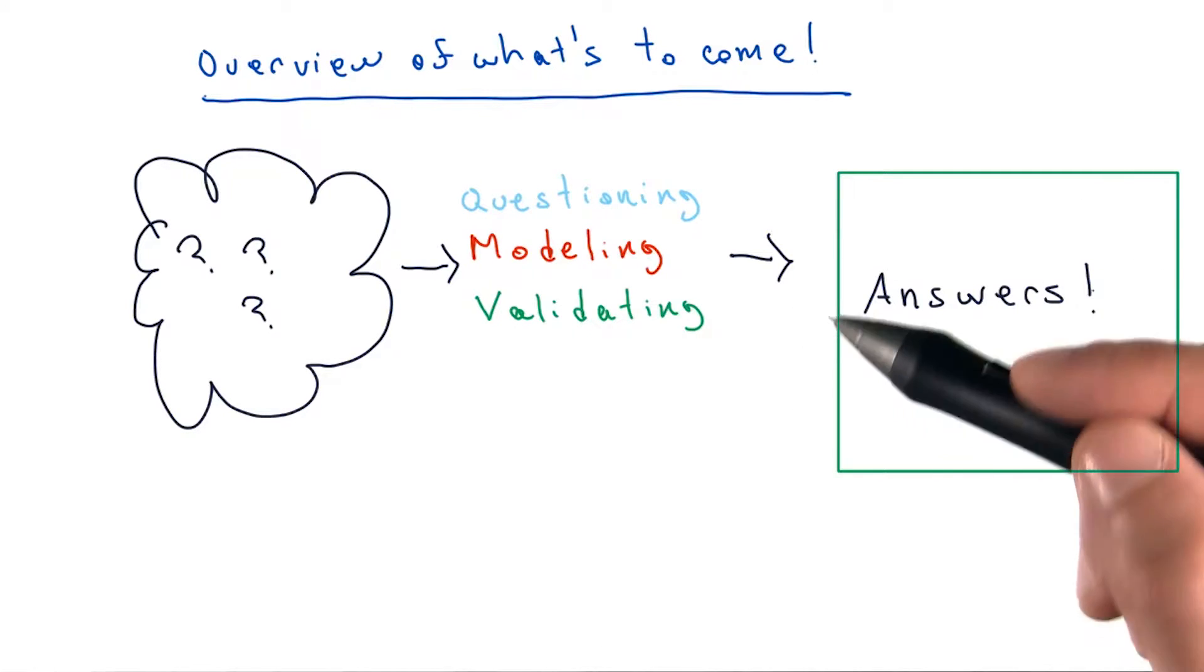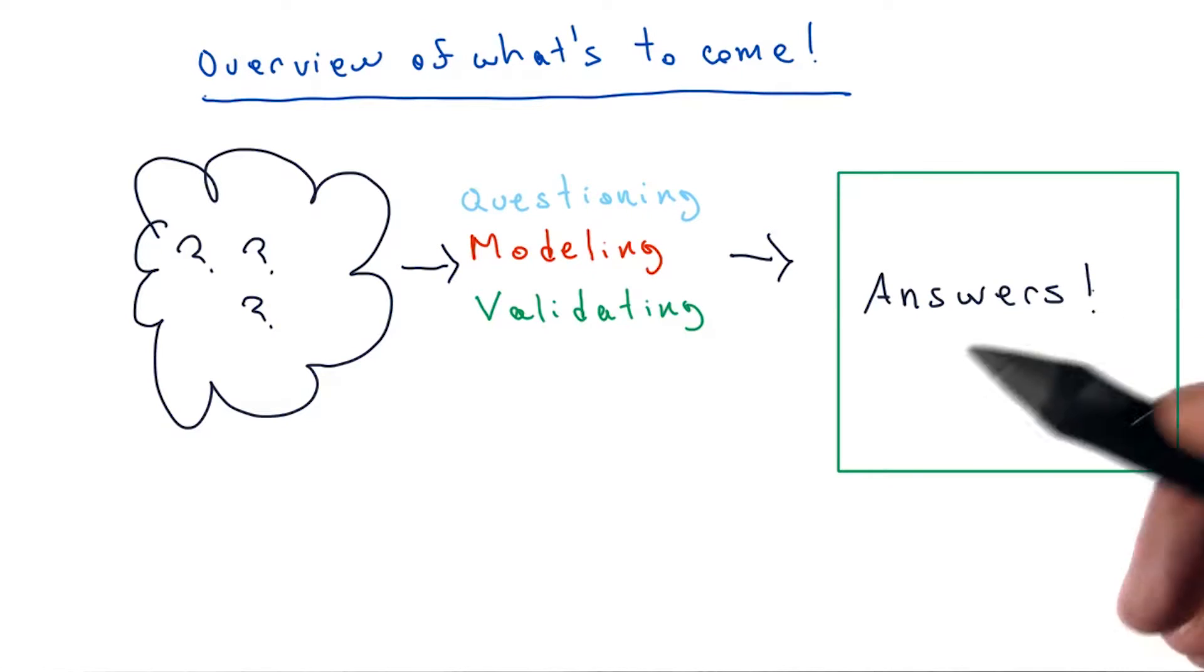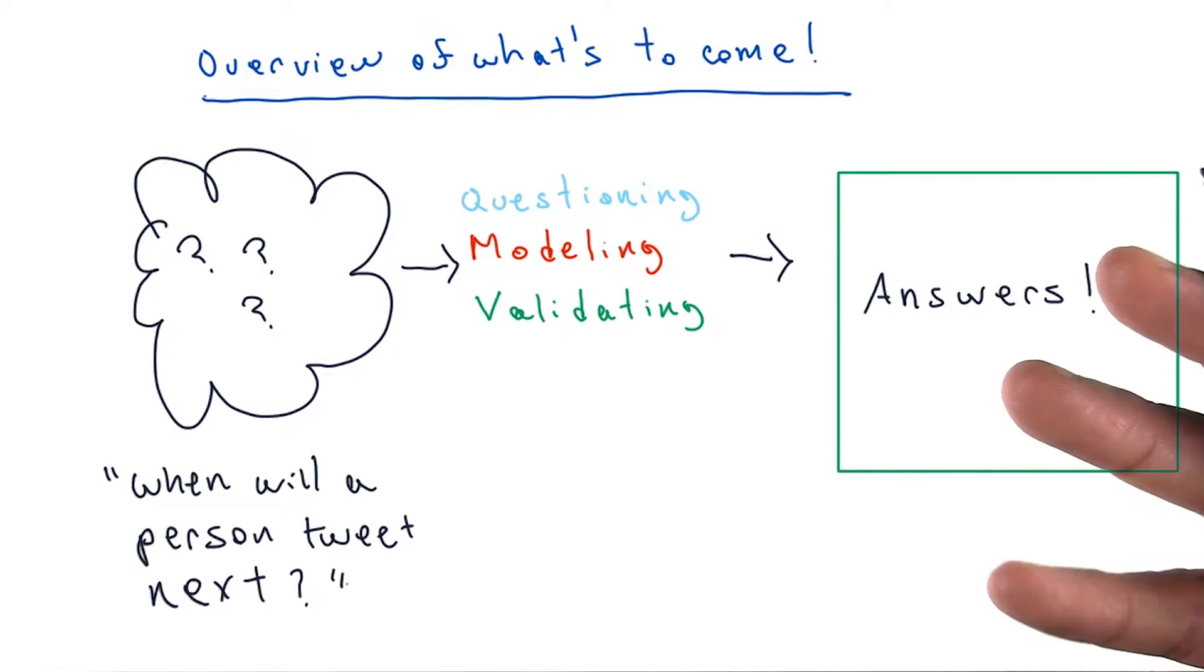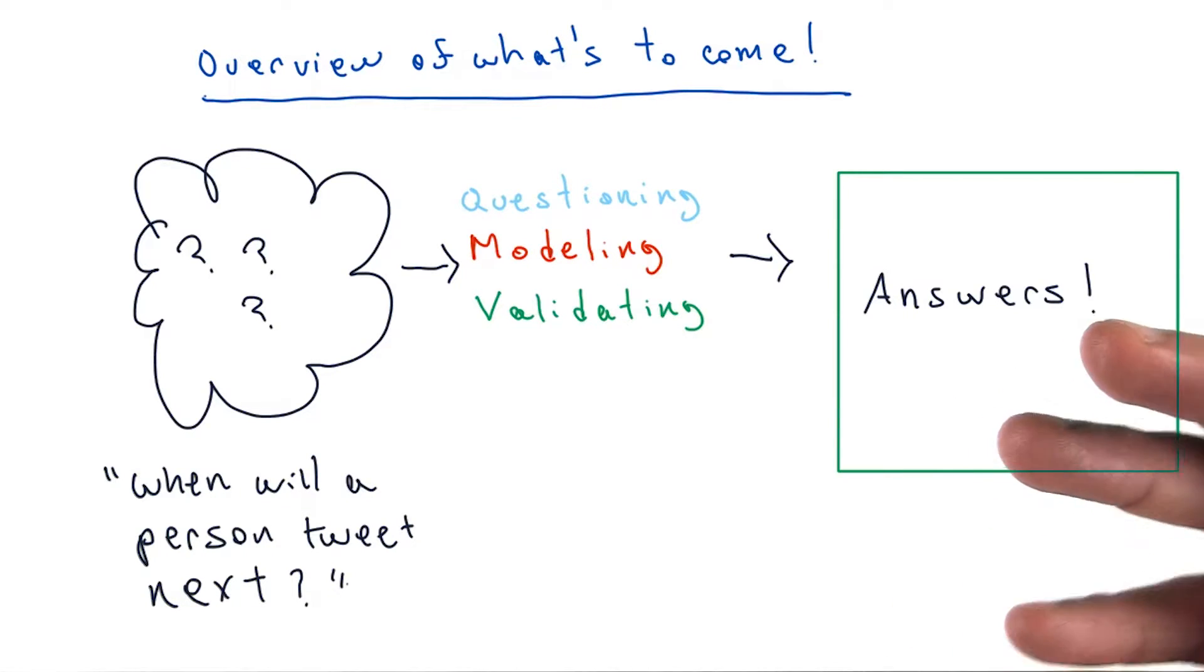We start with something that is vague and general. For example, when will a person tweet next? And we try to turn it into something that is quantitative, concrete, and with uncertainty bounds that are clearly indicated.